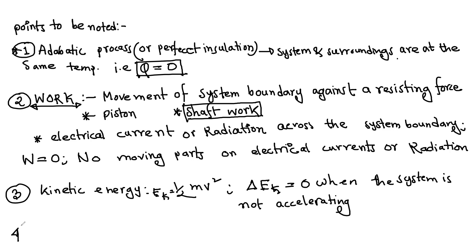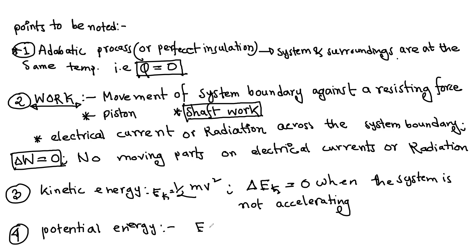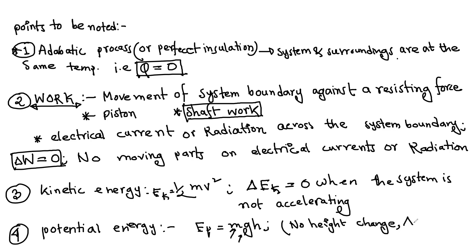Potential energy: EP is equal to mgh. If mass is fixed, gravitational acceleration is fixed, and there is no height change, then delta EP is equal to zero.